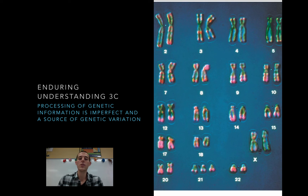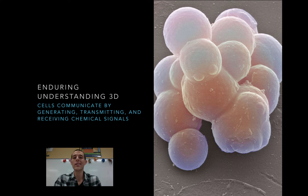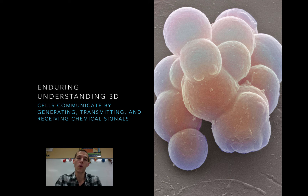Once we've talked about all that variation, we'll move on to 3d, which is that cells communicate by generating, transmitting, and receiving chemical signals. We'll move from looking at DNA to how DNA controls things and how cells talk to each other. Sometimes cells communicate by touching each other; other times they communicate via electrical signals or hormones. Either way, those signals result in some sort of response, and this is where we move on to the response portion of our unit.